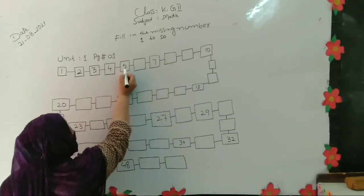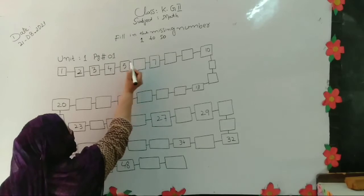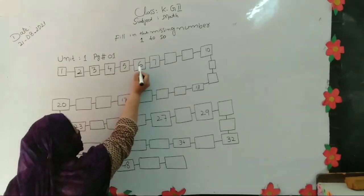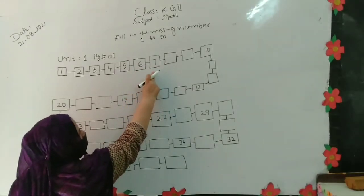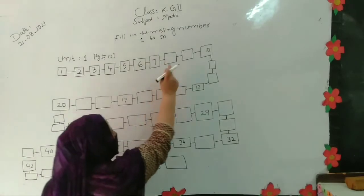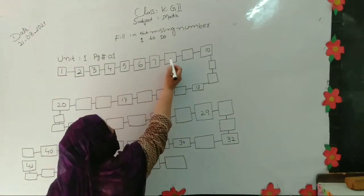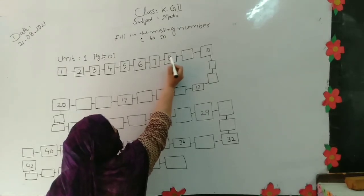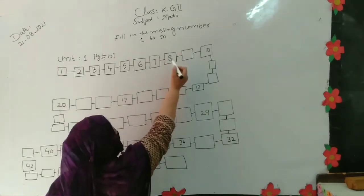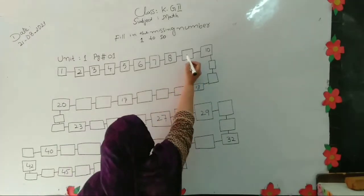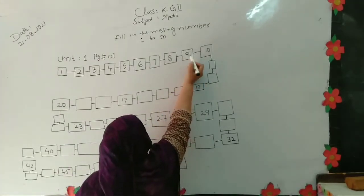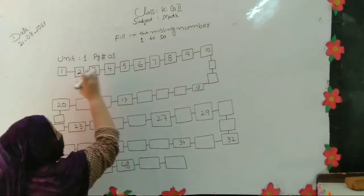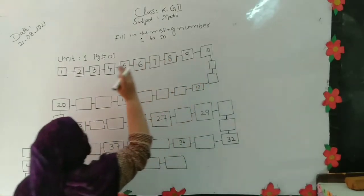Number 5. Next number: 5, 6. Number 7 is already covered — 7 is written in the box. After number 7 is? 8. After number 8 is? 9.